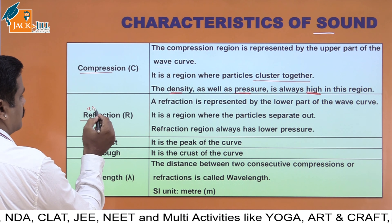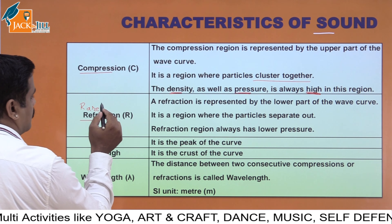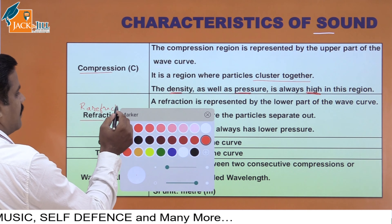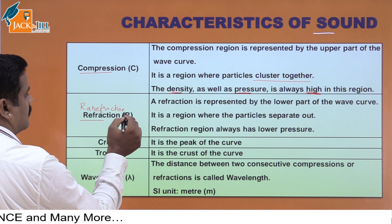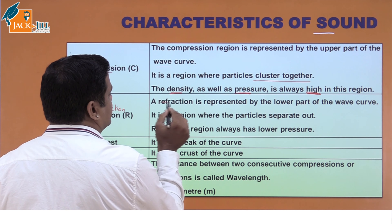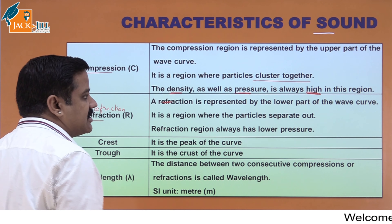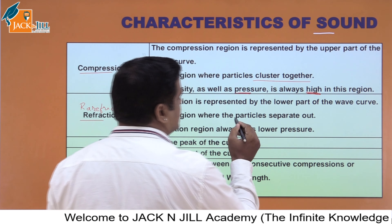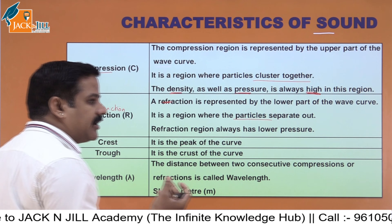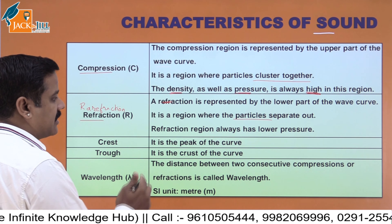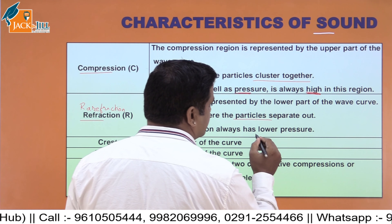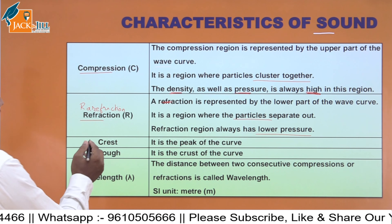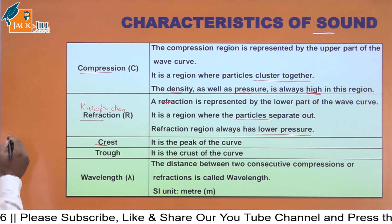Similarly, in rarefaction — it is rarefaction — rarefaction is represented by the lower part of the wave curve. It is a region where the particles separate out, meaning density is very low, particles are far apart. It always has lower pressure and lower density.